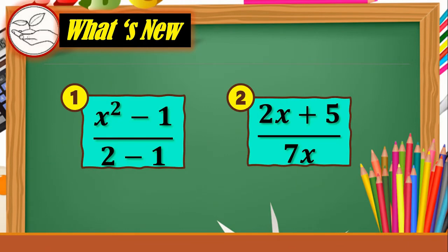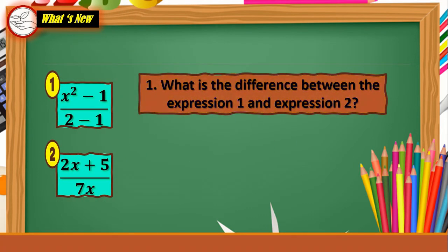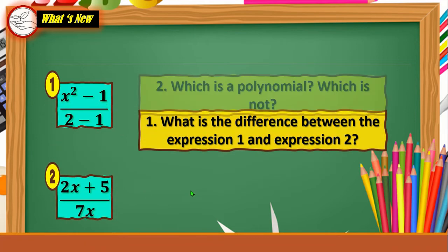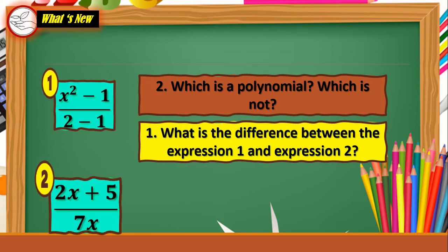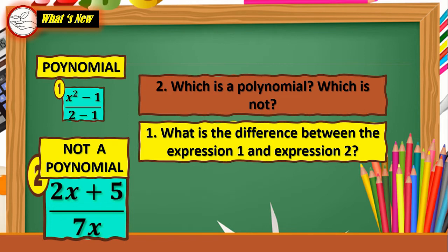Now, what's new? Compare the two expressions. Expression 1: (x² - 1) / (2 - 1). Expression 2: (2x + 5) / 7x. What is the difference between them? Let us look at the denominators. The denominator of Expression 1 is a constant — 2 - 1 equals 1. The denominator of Expression 2 has a variable, x, making it 7x. Expression 1 is a polynomial, while Expression 2 is not a polynomial.